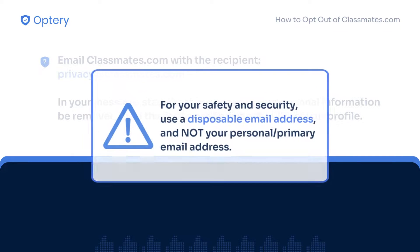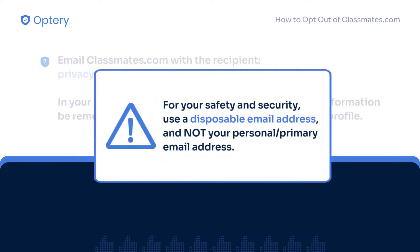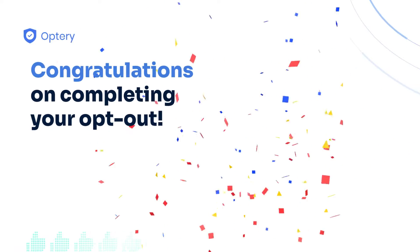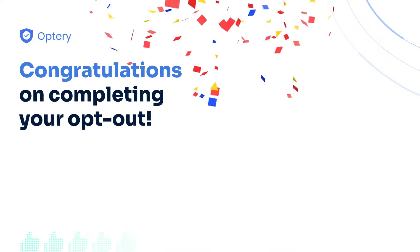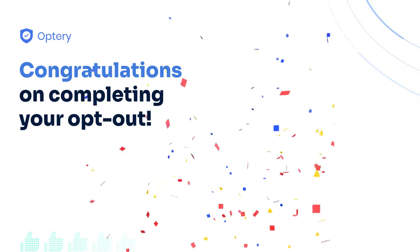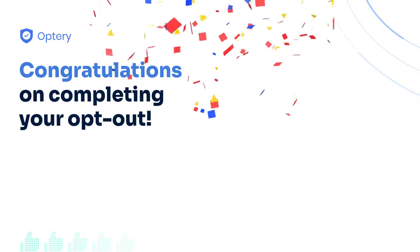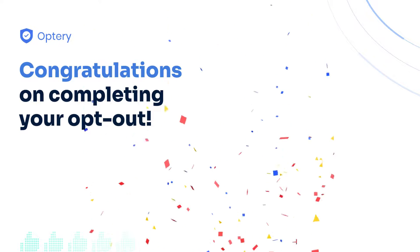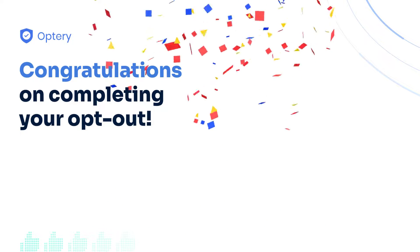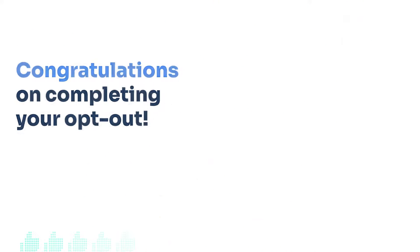It is important to take note that whenever contacting a data broker, we highly recommend using a disposable email address and not using your own primary email address. Congratulations on completing your opt-out for Classmates.com. You have taken a simple but important step towards reclaiming your privacy.